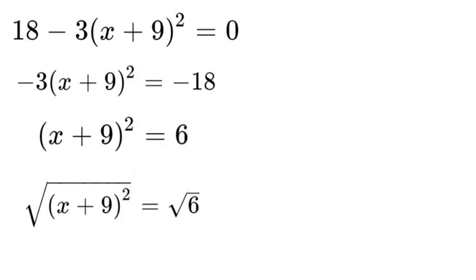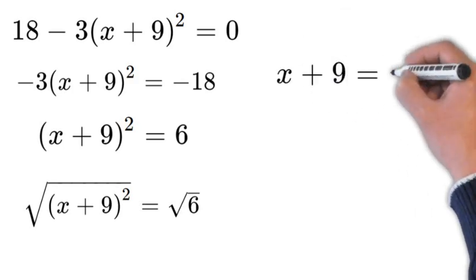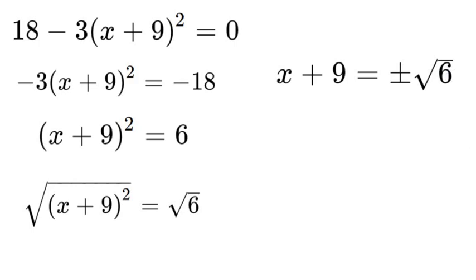Once we have done that our squares will cancel on the left side and then that will leave us with a plus or minus square root of 6. So we will have x plus 9 is equal to plus or minus square root of 6.